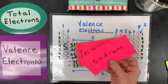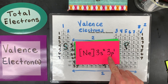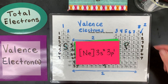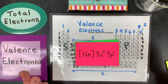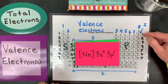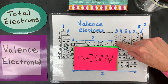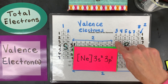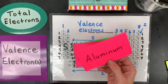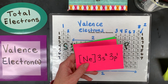How about this one: you've got the neon noble gas core, then 3s2, 3p1. You can count up those as the valence — 2 plus 1 gives 3. And the element? It is aluminum. So aluminum has 3 valence electrons.